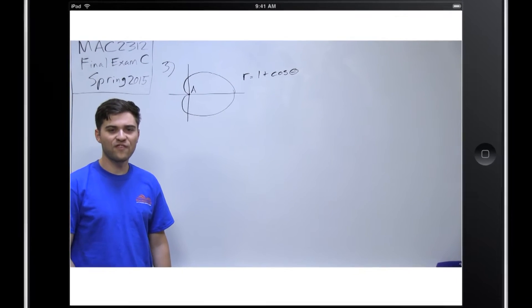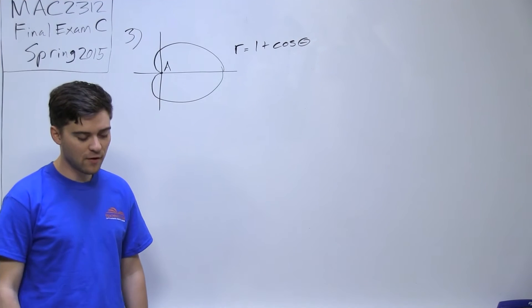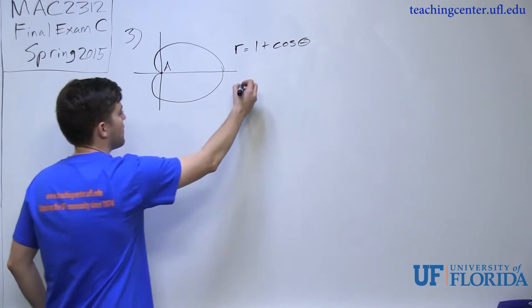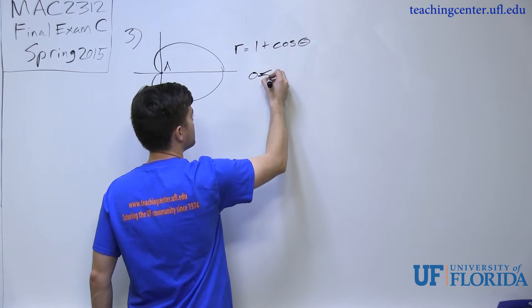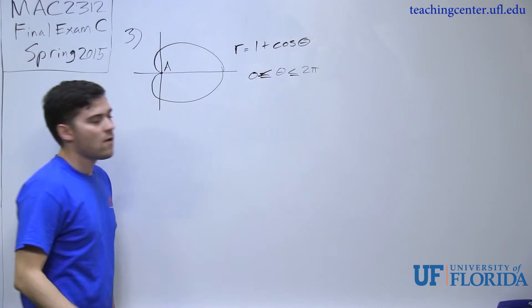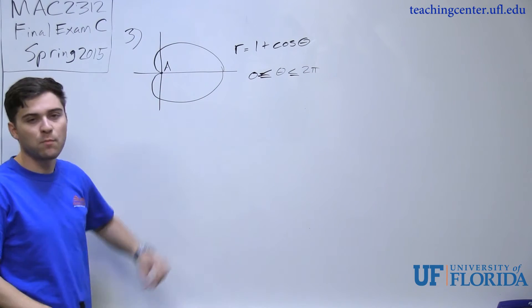Problem number 3 on the final exam is asking you to find what value of theta from theta equals between 0 and 2 pi, what value fits this point A?